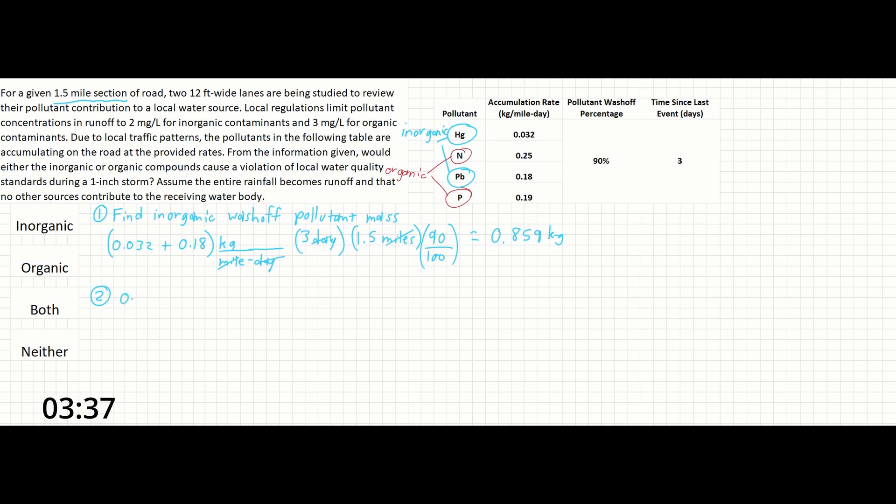So for the organic compounds we will do the same thing. Nitrogen 0.25, phosphorus 0.19 kilograms per mile day times 3 days times 1.5 miles times 0.9, same as the number up here for the wash-off. And that's going to give us 1.782 kilograms of pollutant mass.